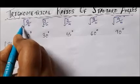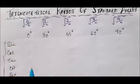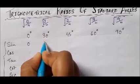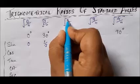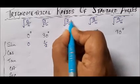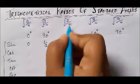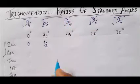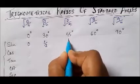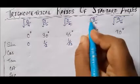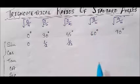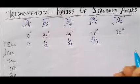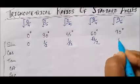The square root of 0 by 4 equals 0, so sine 0 degree is 0. Square root of 1 by 4 gives 1 by 2. Square root of 2 by 4 simplifies to 1 by 2 under the root, which is 1 by root 2. Square root of 3 by 4 is root 3 by 2. And square root of 4 by 4 equals 1.